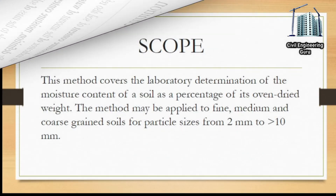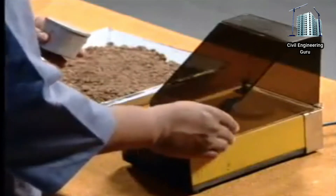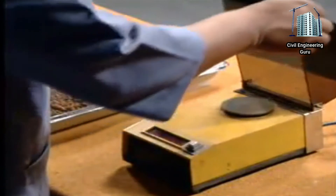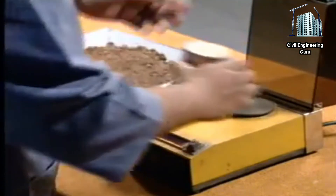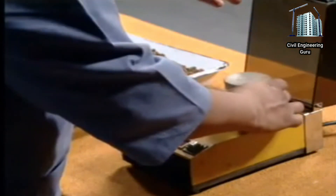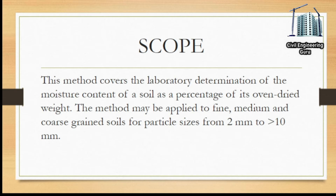This method covers the laboratory determination of the moisture content of the soil as a percentage of its oven-dried weight. The method may be applied to fine, medium, and coarse grain soils for particle sizes from 2 millimeters to 10 millimeters.